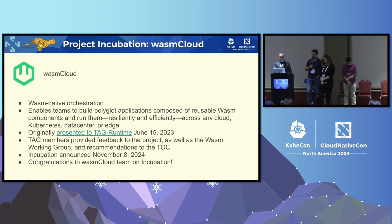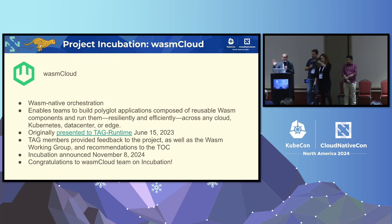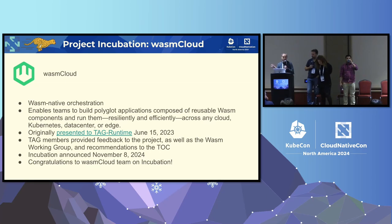Another highlight: we have WasmCloud, which presented on June 15th. Incubation was announced on November 8th, very recently. WasmCloud allows you to orchestrate cloud-native workloads using WebAssembly modules in an efficient way. You can run these across multiple places and connect all of them together to run something like a queuing system, or databases, or anything related to cloud-native that you would normally do with applications running on top of Kubernetes.